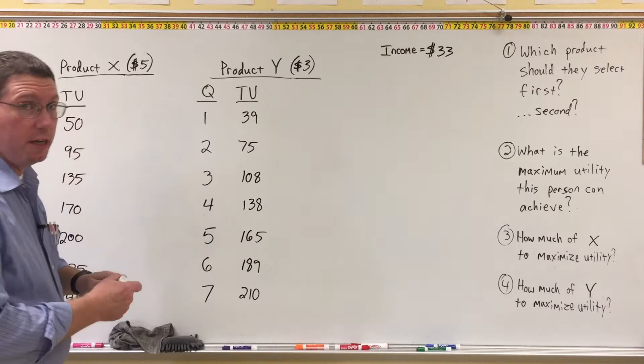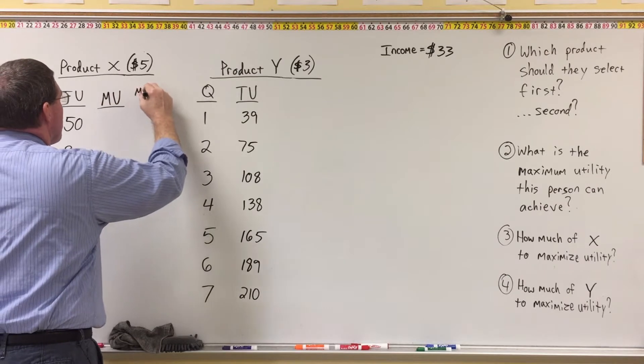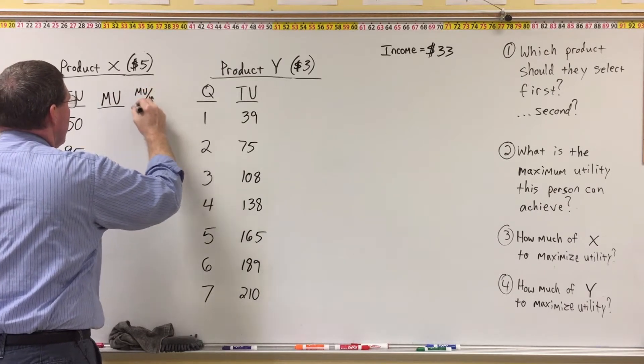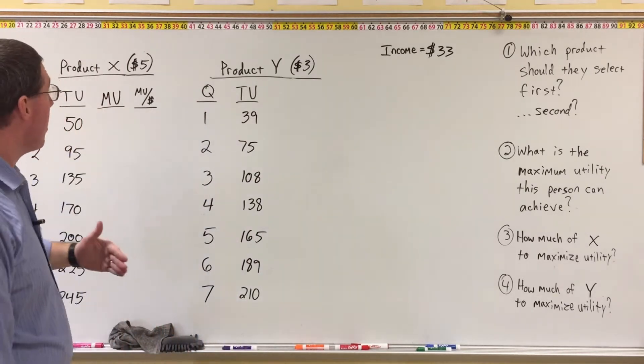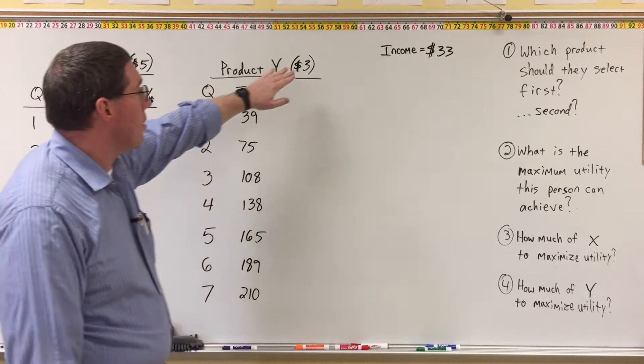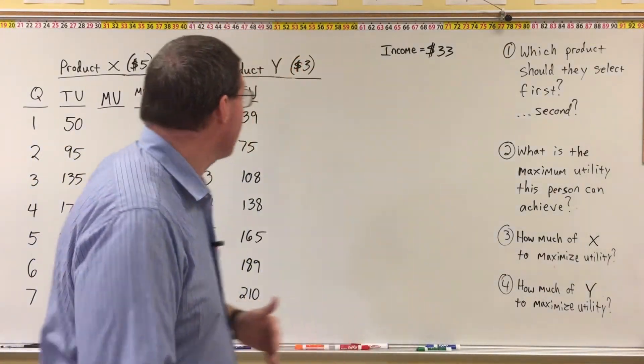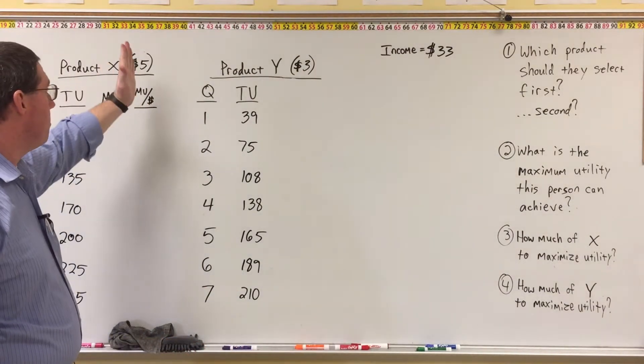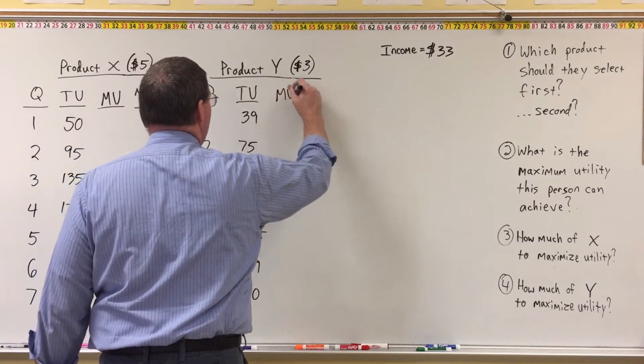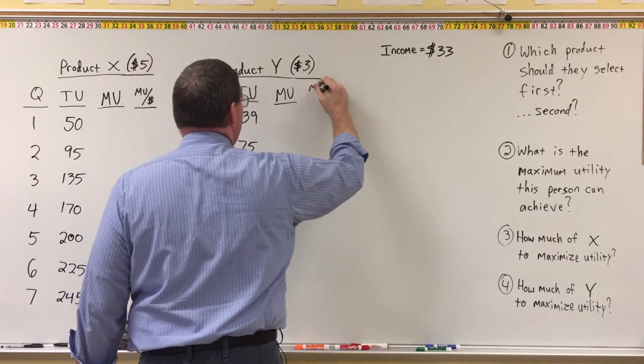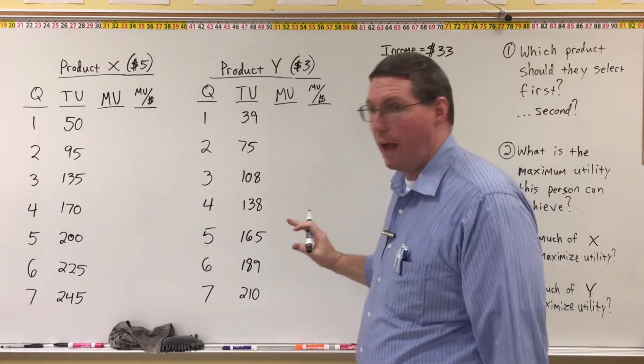You're going to need marginal utility and marginal utility per price. Now, remember that we said you could do this with just marginal utility, but only if the two products have the same price. In this case, product X is $5, product Y is $3. They do not have the same price, and therefore we can't use just marginal utility. We need to be comparing marginal utility per price. Okay, so over here we'll do a column for marginal utility and marginal utility per price, and now all I'm going to do is just fill in the two tables.